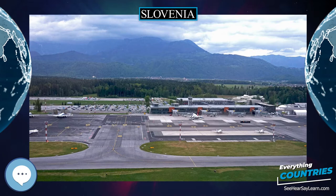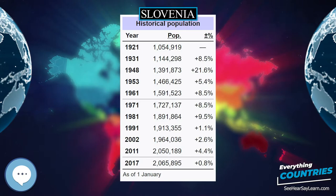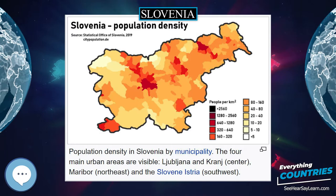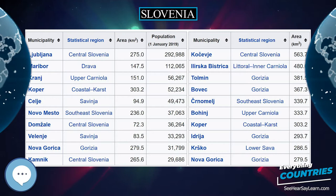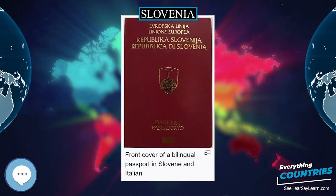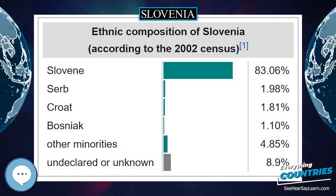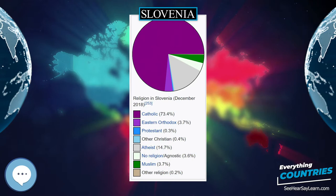The Ljubljana Marshes wooden wheel is the oldest wooden wheel in the world, showing that wooden wheels appeared almost simultaneously in Mesopotamia and Europe. In the transition period between the Bronze Age and the Iron Age, the Urnfield culture flourished. Archaeological remains from the Hallstatt period have been found particularly in southeastern Slovenia, among them a number of situlas in Novo Mesto, the town of situlas. In the Iron Age, present-day Slovenia was inhabited by Illyrian and Celtic tribes. The area that is present-day Slovenia was in Roman times shared between Venetia and Histria and the provinces of Pannonia and Noricum.